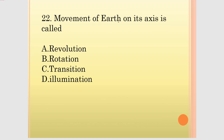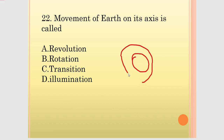Movement of earth on its axis is called rotation. Revolution is the movement of the earth around the sun. So: rotation is the spinning on its own axis, and revolution is the movement around the sun.